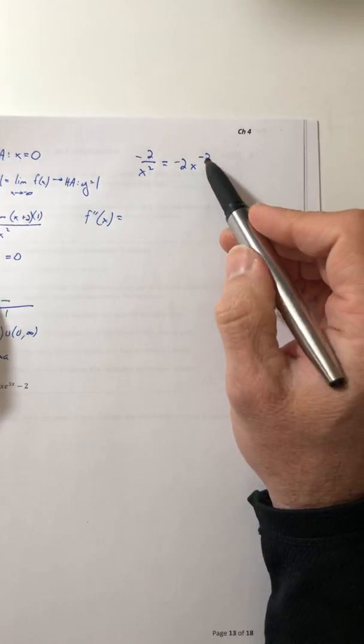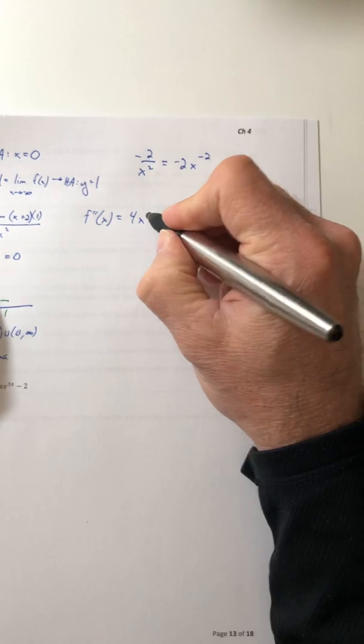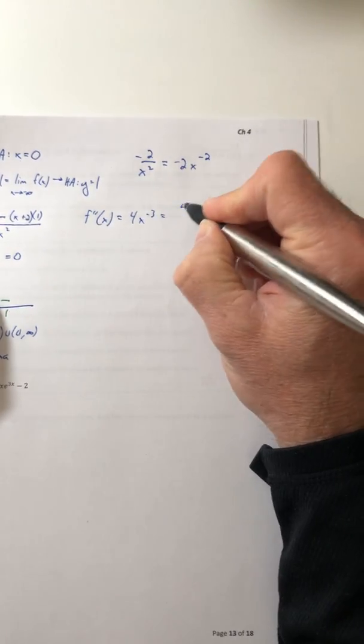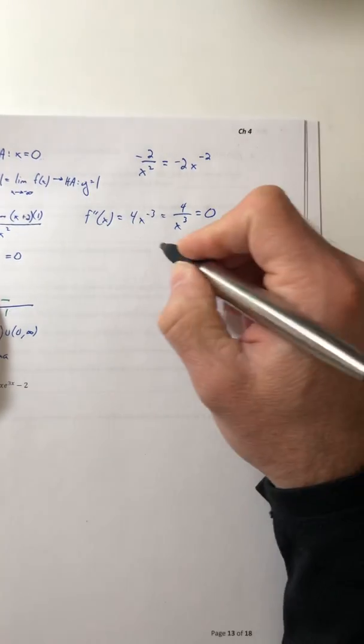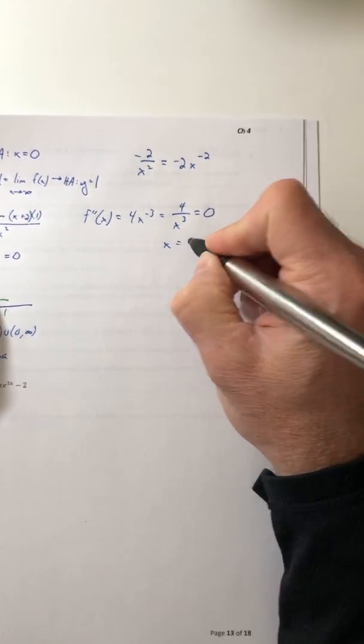So our second derivative, just pull the power down for x to the negative three. And then if you want to flip it back down to the denominator, set it equal to zero and x is going to equal zero again.